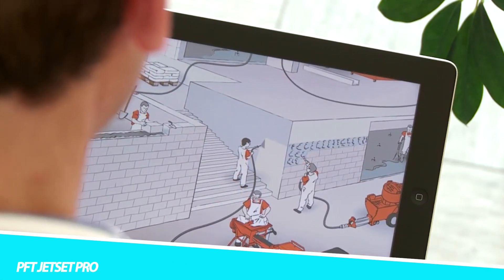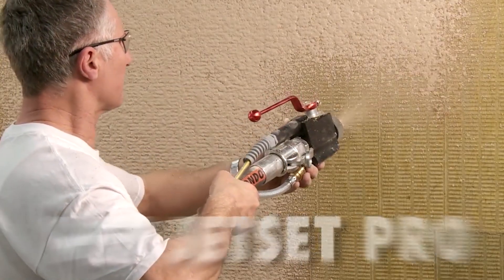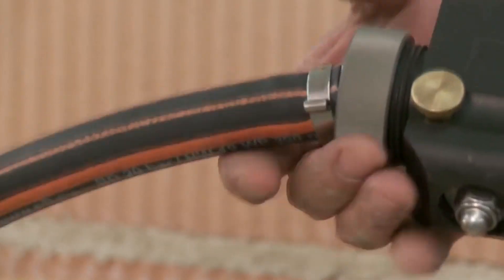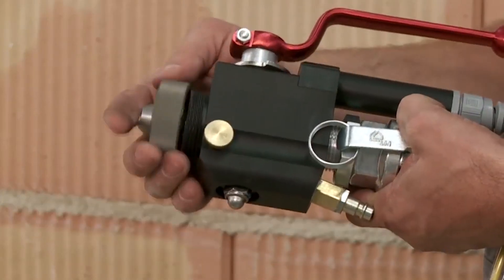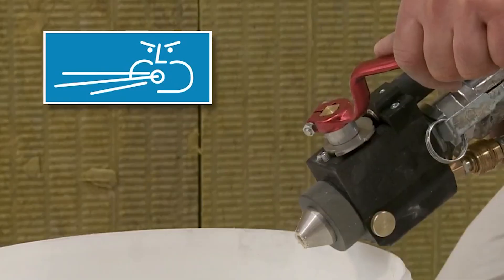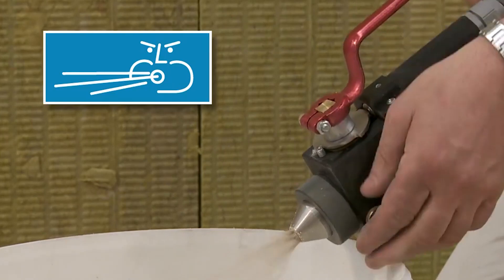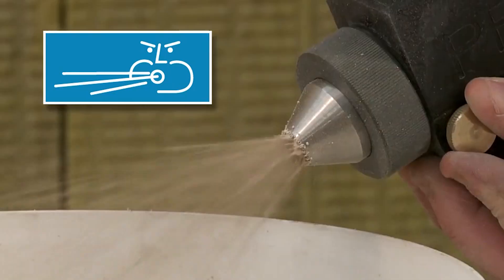PFT Jet Set Pro is a type of construction technology used for the application of various types of plaster and mortar. The PFT Jet Set Pro is a powerful and versatile plastering machine that uses compressed air to apply a variety of plaster and mortar mixtures to walls and other surfaces.